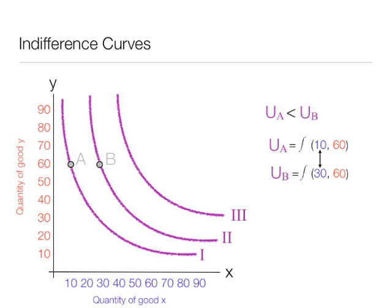Let me add one more point in here, it would be point C. And at point C, utility is a function of 50x and 60y. So we know that utility C is greater than utility B, is greater than utility A. Again, same amount of y, but a lot more x, from 30 to 50.